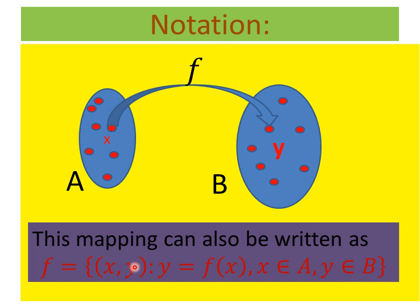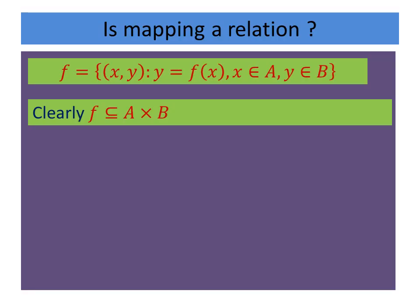Y is the image of X and X is the pre-image of Y. The ordered pair has two components: the first component is the pre-image and the second component is the image under the mapping f. Written in this form, you can clearly see that f is a subset of A × B.